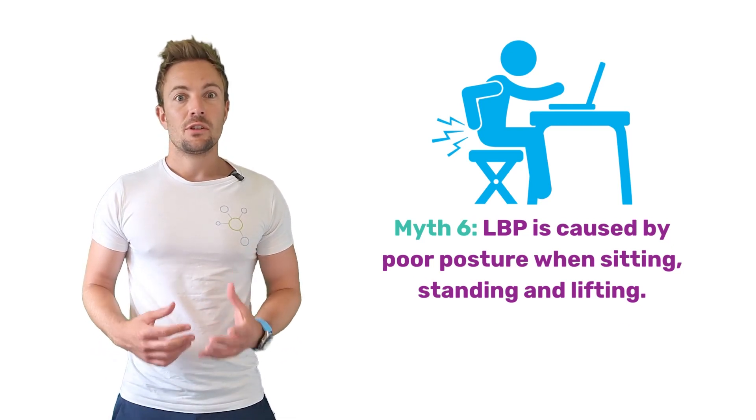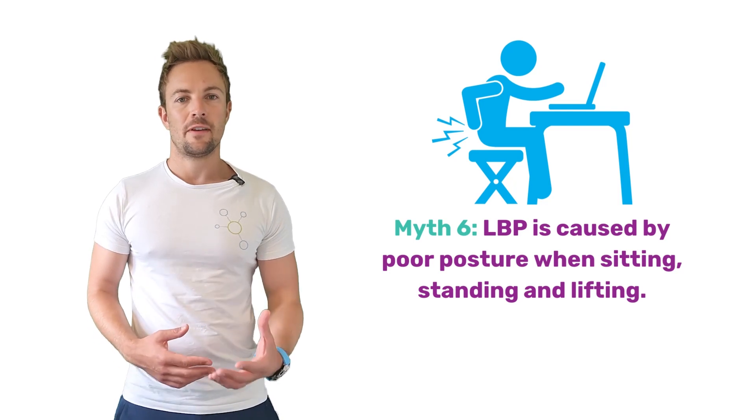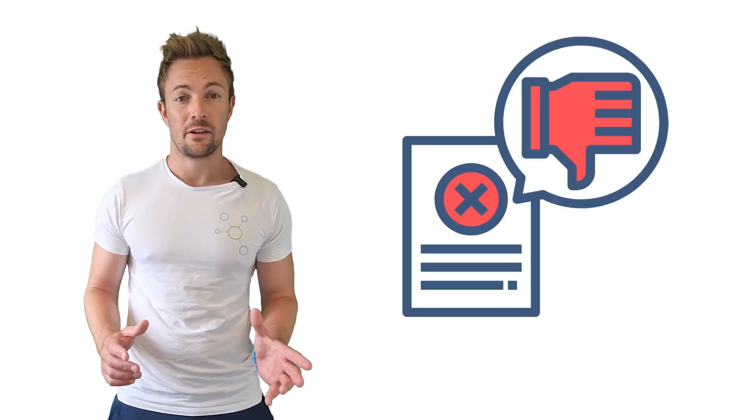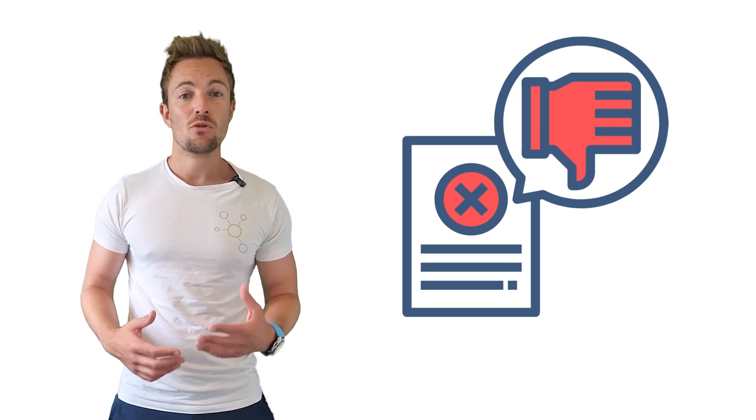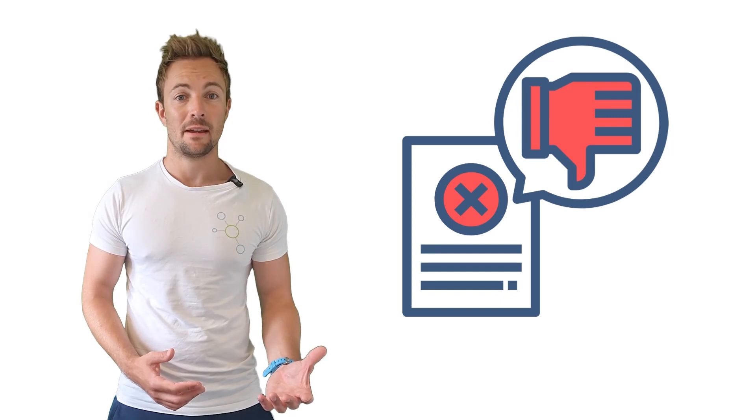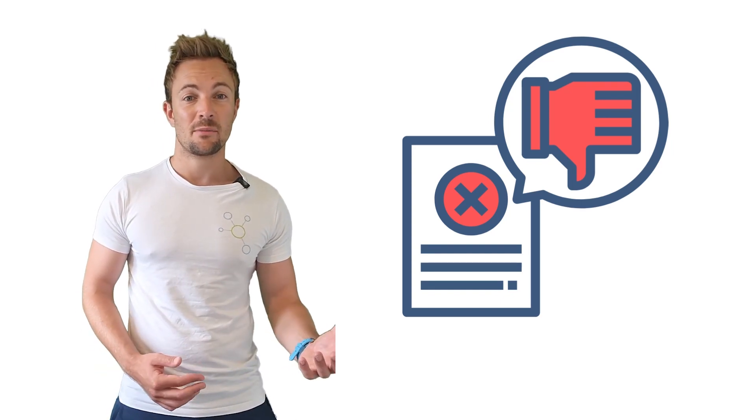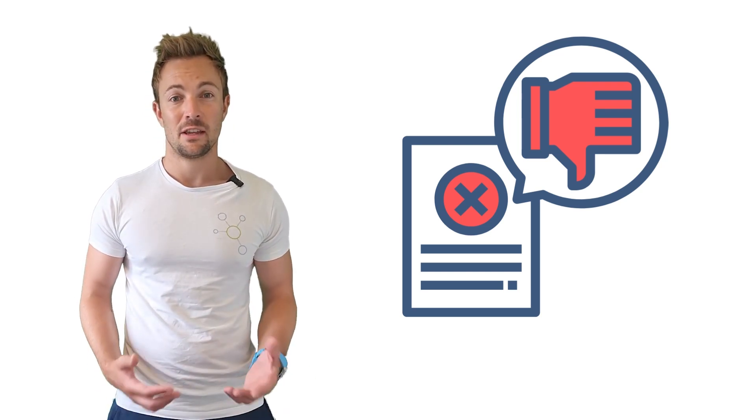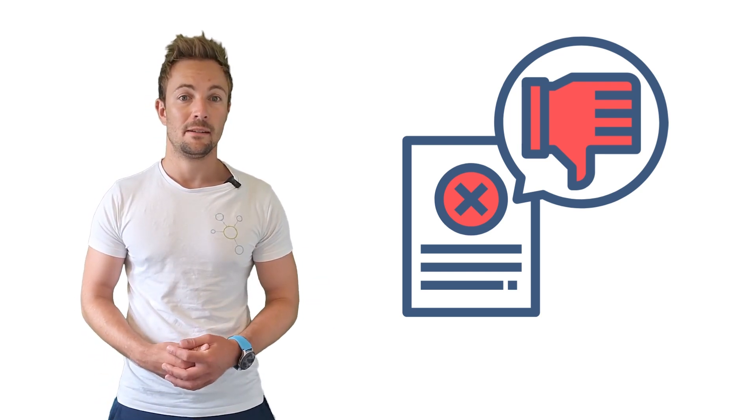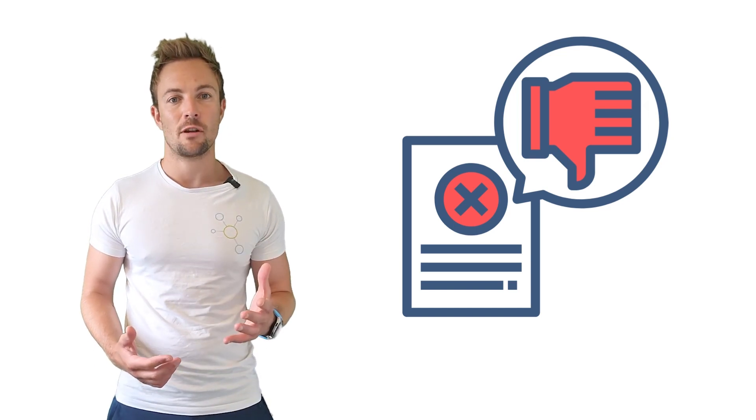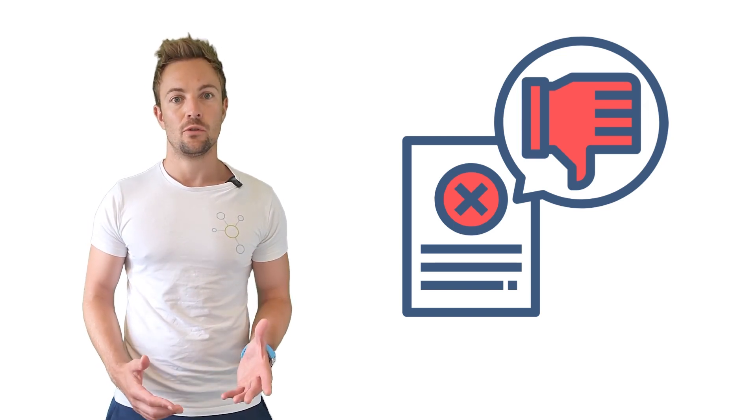Experts have long suggested that maintaining good posture is essential for preventing lower back pain. However, recent research has refuted this theory. They found that there's no correlation between posture and the incidence of lower back pain. In other words, whether you sit up straight or slouch when you're sitting, standing or lifting doesn't seem to make a difference in your risk of developing lower back pain. This is surprising news for many people who've been diligently trying to improve their posture in order to avoid pain.